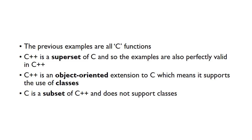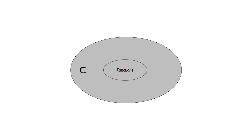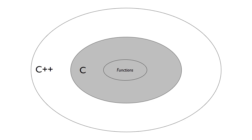You can use functions in C++ but you cannot use classes in C. Think of it like a Venn diagram — this circle represents the C programming language. As part of C we've got functions. C++ is a superset of C, so it encompasses everything that's part of C: for loops, while loops, all the different data types, printf, and so on. But classes are only part of C++, defined in this extension to C, so you cannot use classes inside of C.